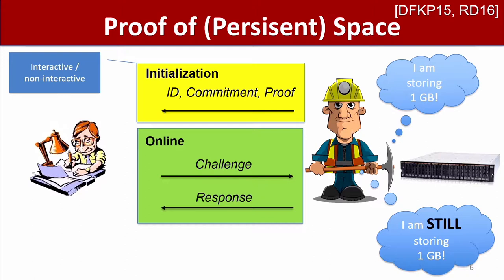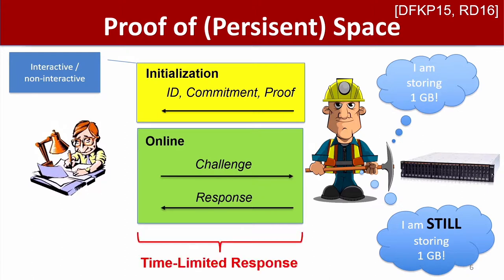Notice something regarding the efficiency of initialization versus the online phase. If the prover could just rerun the initialization to respond to the online challenges, this wouldn't work as a proof of persistent space — the prover could delete its space after each challenge and redo the initialization to respond. So we define this by restricting the time the prover has to respond to challenges; the response time must be much shorter than the time it takes to run the initialization.